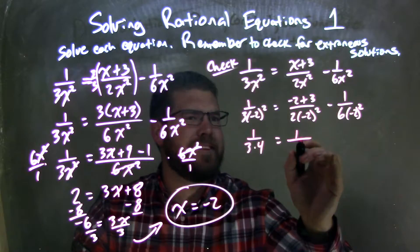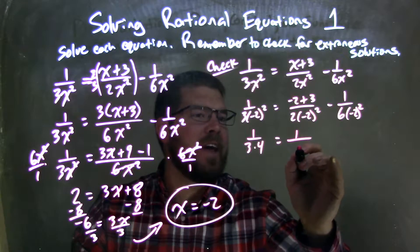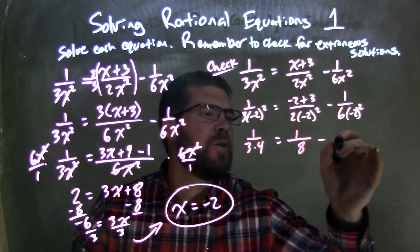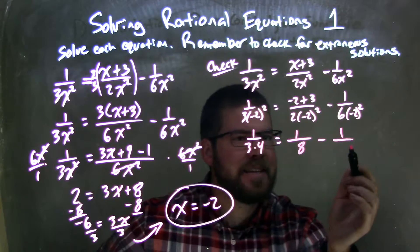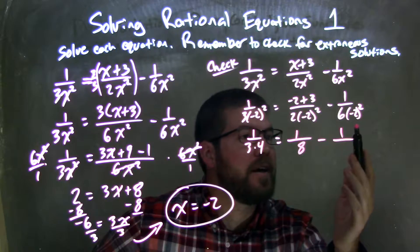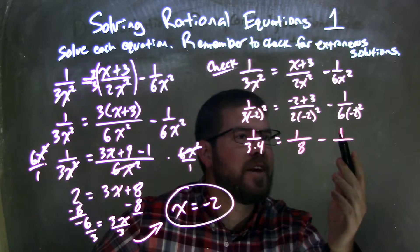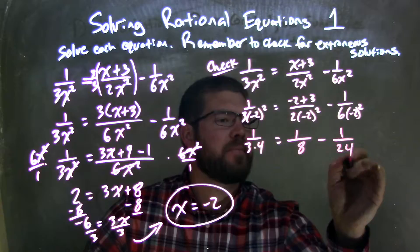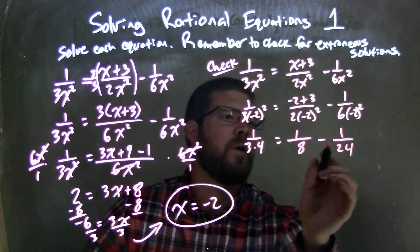So we have 1 over 8 minus 1 over—negative 2 squared is 4, times 6 is 24—so 1 over 24. The numerator is 1, we're good.